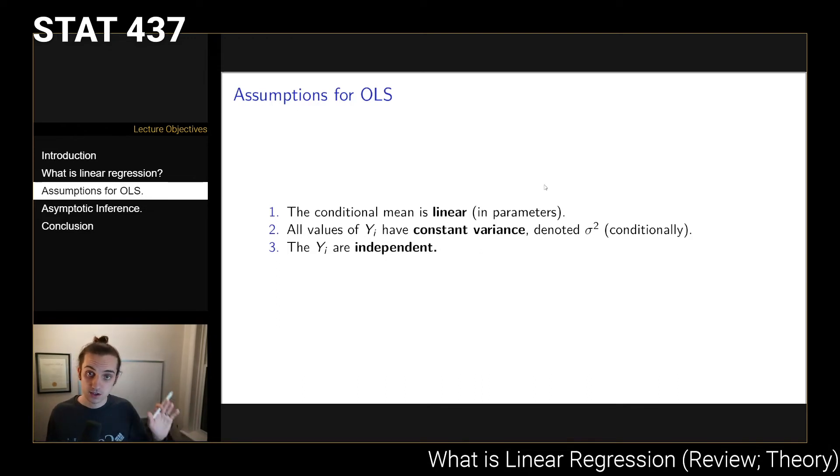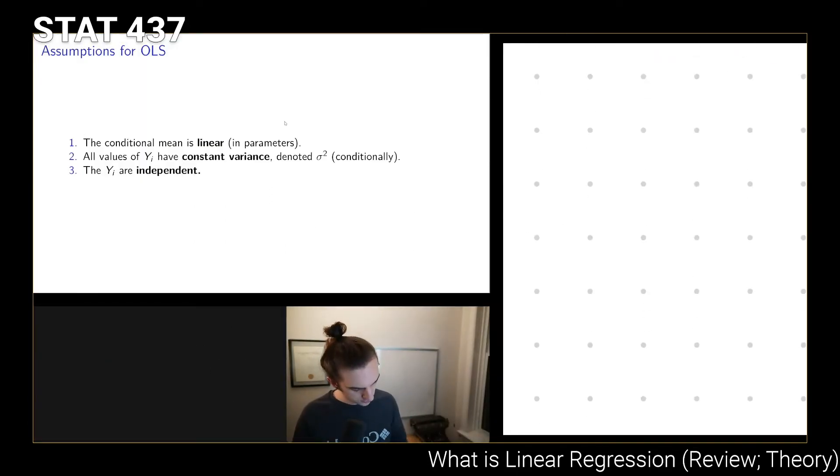We also assume that the Yi's are independent. There's a general way that we would write this if we're going to be using the normality version of it. We might say that Yi given Xi are going to be distributed iid normal with mean given by Xi*beta and variance given by sigma squared. The idea is that this mean is linear in the parameters, so that's the first assumption, and the constant variance is given by the sigma squared here, so that's assumption number two.